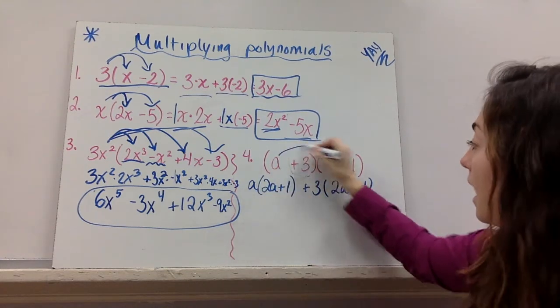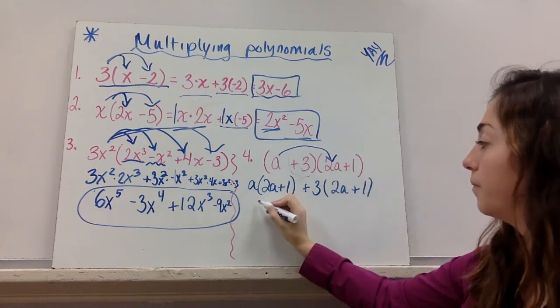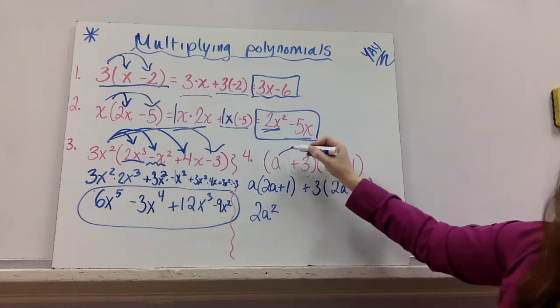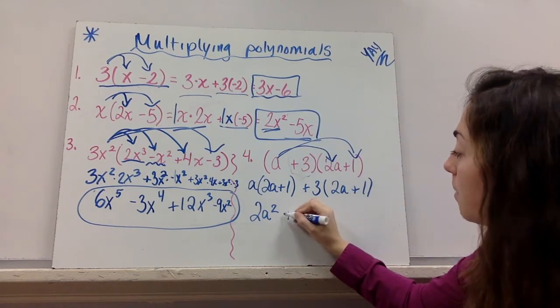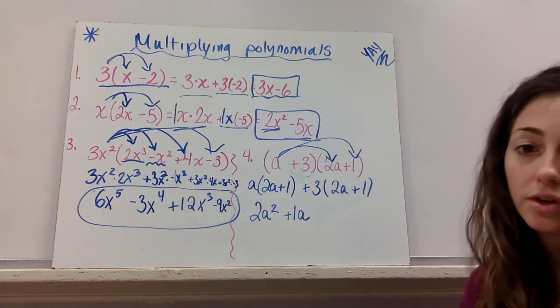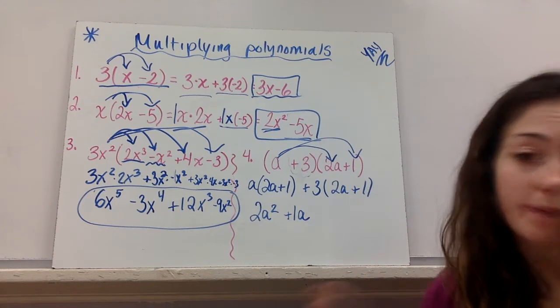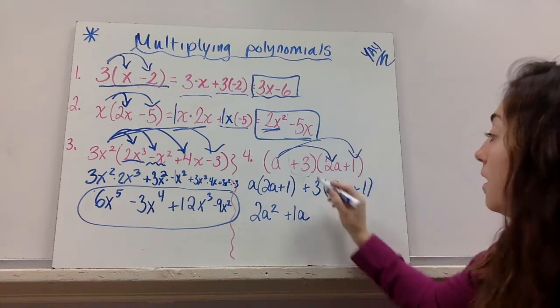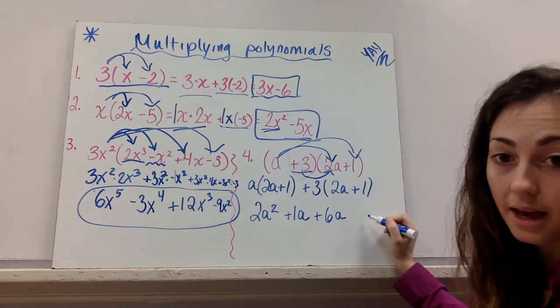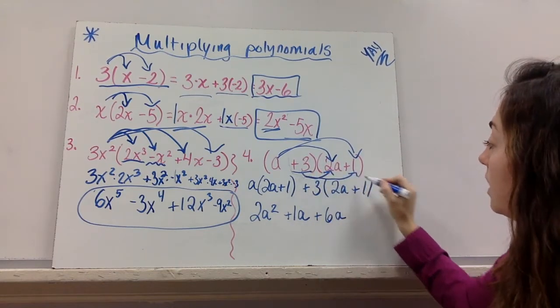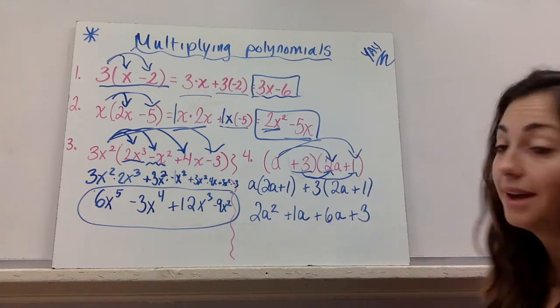So you have to do first a times 2a, which is 2a squared. Then I need to do a times 1, which is positive 1a. Don't forget you need a sign in between whether it's positive or negative. These are all positive. Then I need to do the 3. Positive 3 times 2a is 6a. Then I need to do 3 times 1, which is 3.